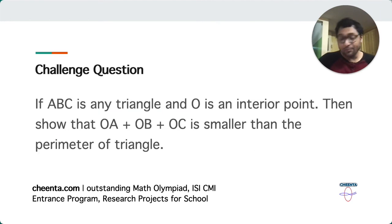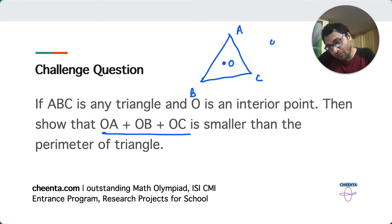Now, as I promised you that there will be a challenge question. And here it is. If ABC is any triangle. If ABC is any triangle. And O is a point inside the triangle. Show that the sum of OA plus OB plus OC is less than equal to the perimeter of the main triangle. So can you do this? Can you do this?